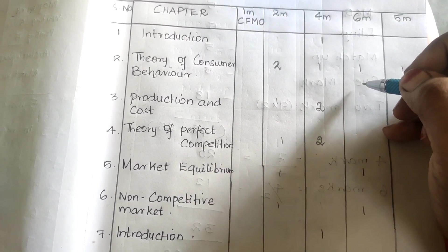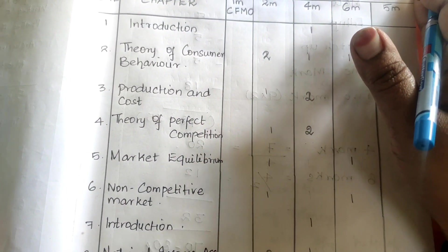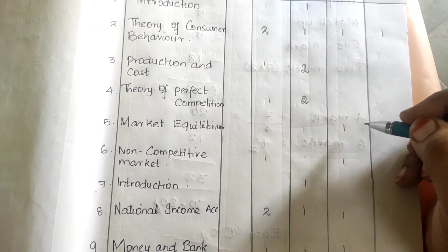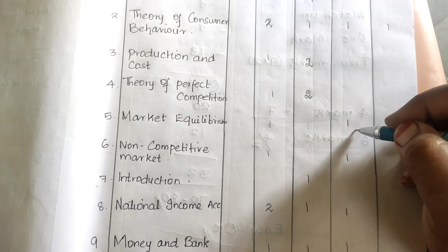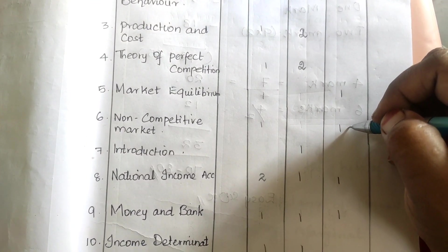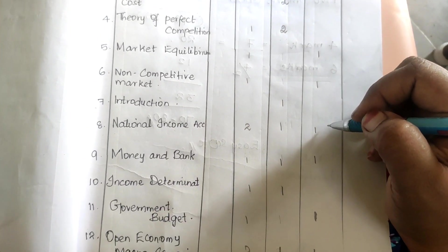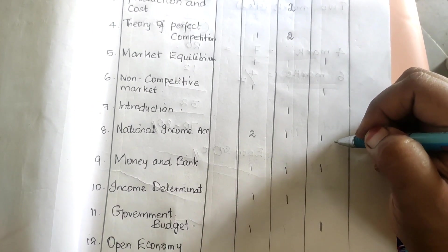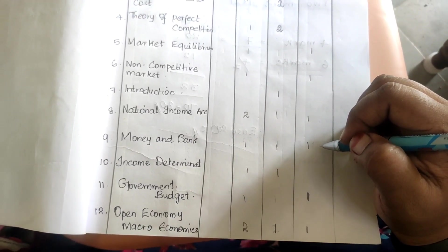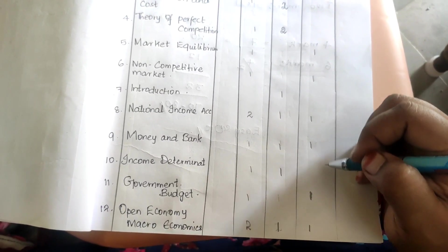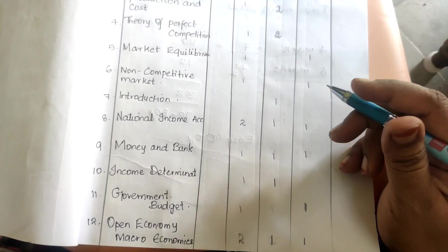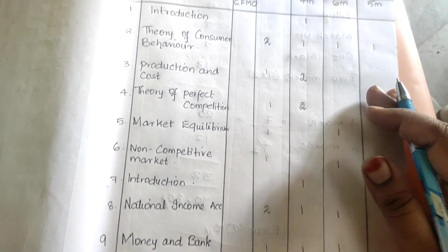For six-mark questions, the second chapter is very, very important — you must prepare it. After that, one question from the fifth chapter, one from the sixth chapter on national income, one from the eighth chapter, one from the ninth chapter, and one each from the eleventh and twelfth chapters will surely be asked.